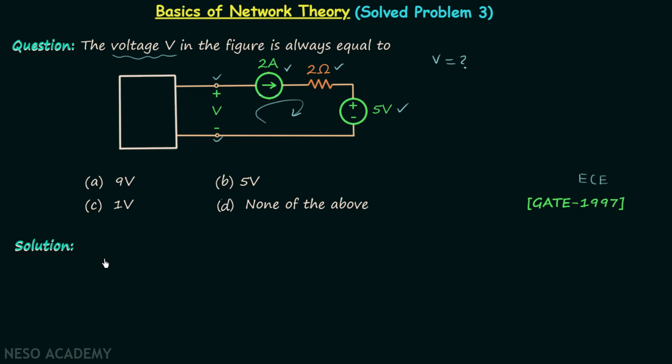Let's apply KVL. We will have plus V, plus V, then we have the voltage across the current source. We very well know that the voltage across the current source is dependent on the network in which it is connected.